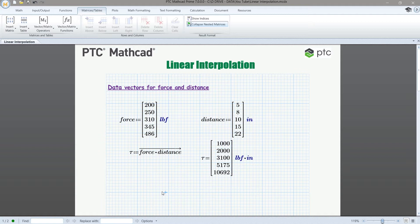So now we have a force vector, and we have a torque vector. And we are going to build an interpolation model that will allow us to interpolate values of torque for any given input of force, between 200 and 486.